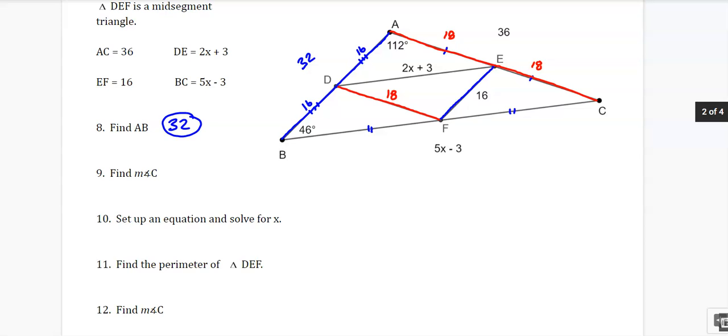Find the measure of angle C. If you look at the entire triangle, we have a 46 and we have a 112. So that is 158. And if we subtract that from 180, that leaves us 22 degrees left over here in that little angle C. So 22 degrees.